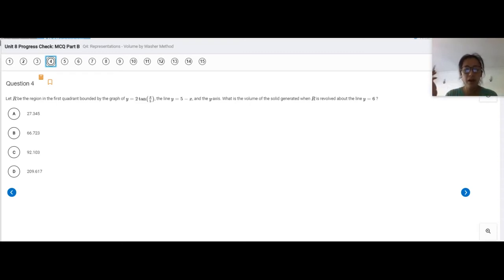Okay, so we're going to go ahead and revolve whatever area is bounded by those two graphs in the first quadrant around the line Y equals 6.